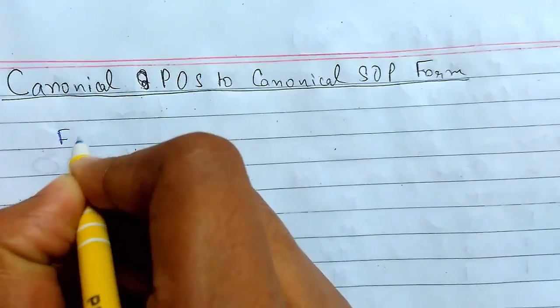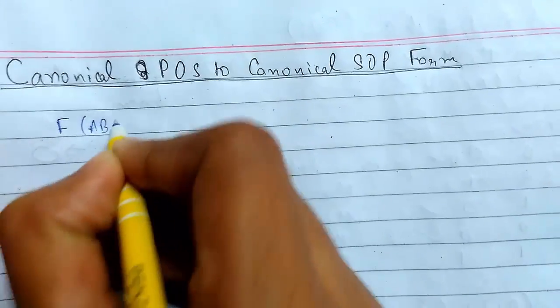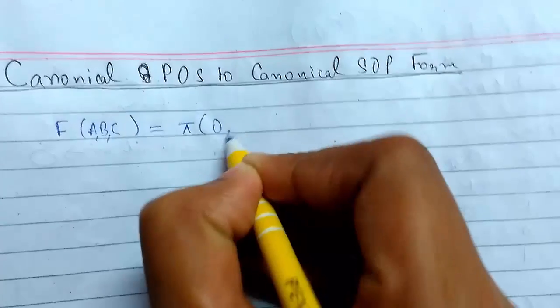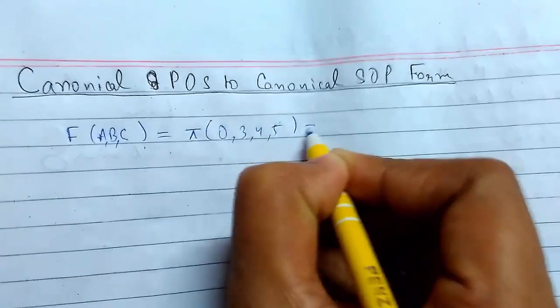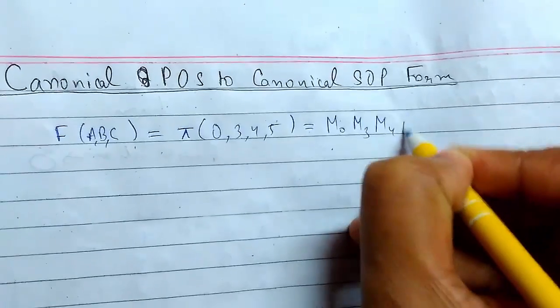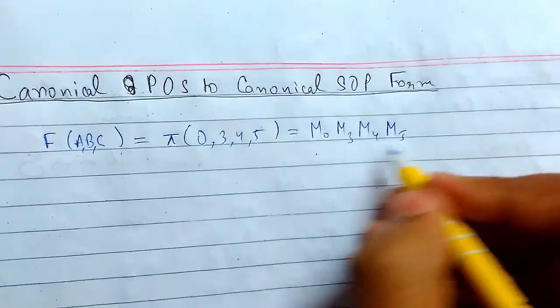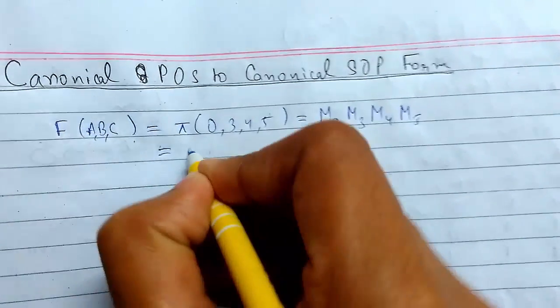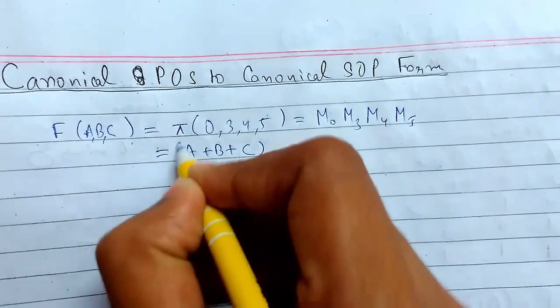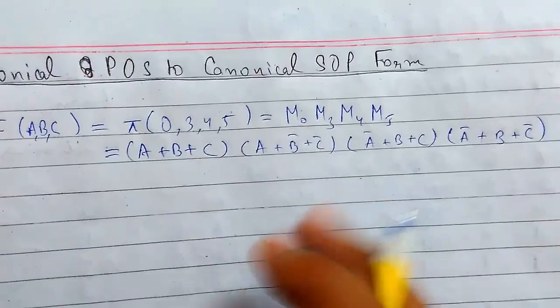Suppose we have a function F(A,B,C). First, write this. This will be π(0,3,4,5). Now I will write the max terms of all of it. I have written the max terms.